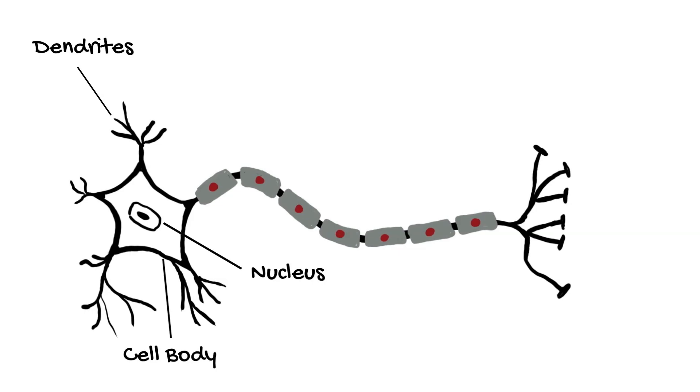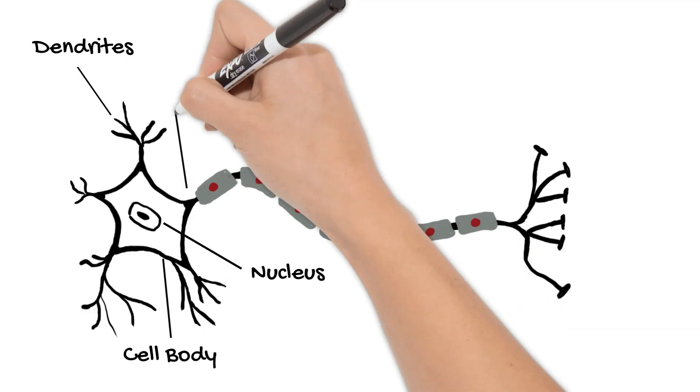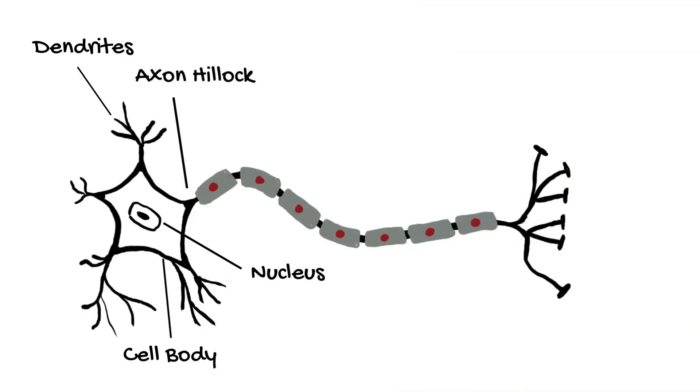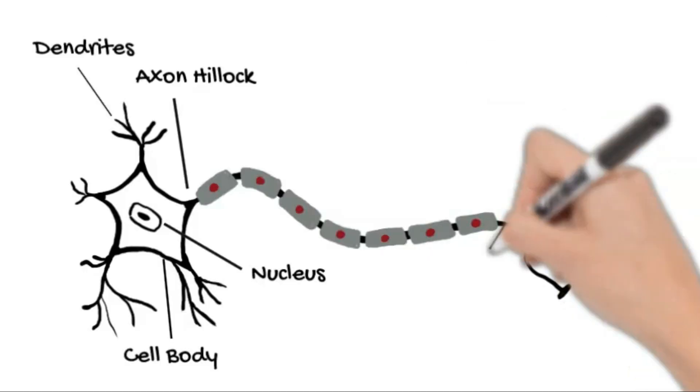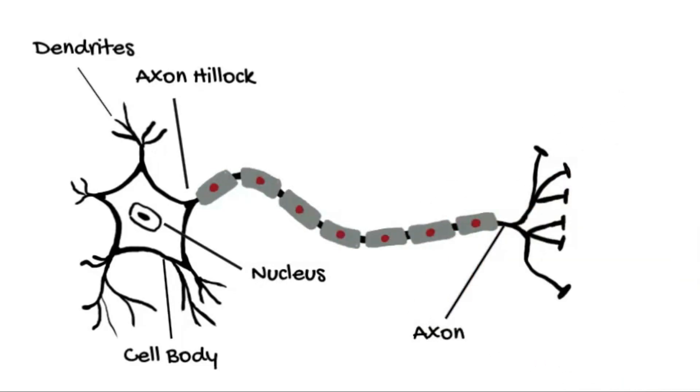It contains the cell's DNA and lives inside the soma. When enough signals have arrived at the cell body, the axon hillock and initial segment start sending electrical signals away from the cell body down the axon. These electrical signals are called action potentials. We will cover action potentials in more detail in another class.